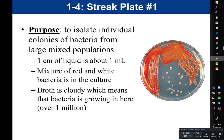Our first streak plate is going to be a mixture of red and white bacteria, so we can see if we can isolate the two types — meaning do we get some colonies that are red and some that are white. The broth, the original culture, is cloudy, which tells us that bacteria is growing in it. When we refer to a broth as being cloudy, we call that being turbid.